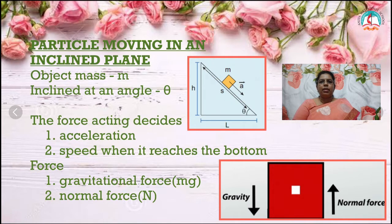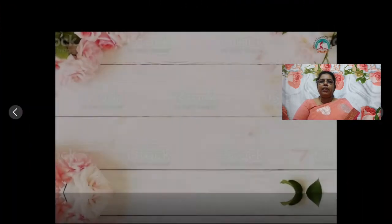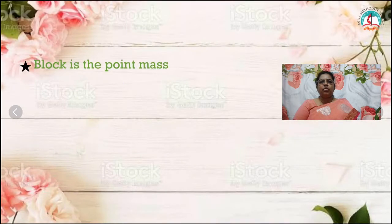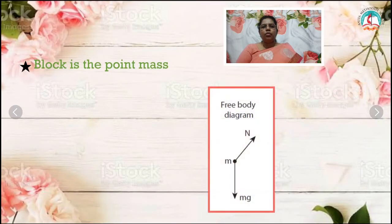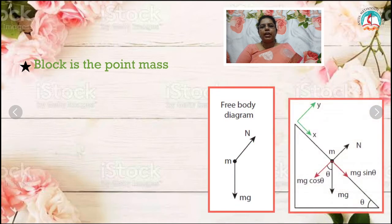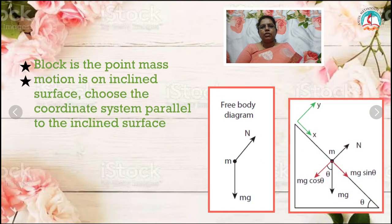M is the mass of the object moving on the inclined plane, A is the acceleration acting along this direction, S is the distance, and H is the height. We have to draw the gravitational force in this direction and the normal force perpendicular to the inclined plane. We can consider the block to be the point mass — this is the free body diagram. Next, we have to choose the coordinate system with respect to the inclined plane.